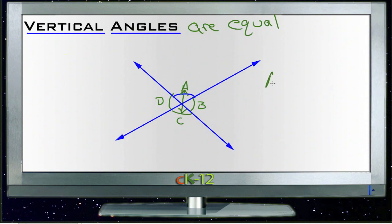So we have angle A is going to be equal to angle C. And then here, angle D is going to be equal to angle B because they're vertical angles.